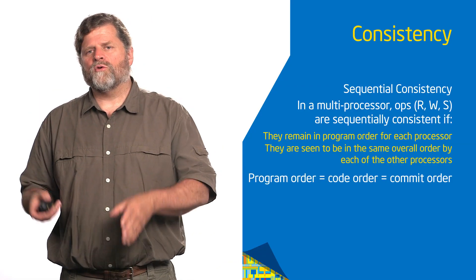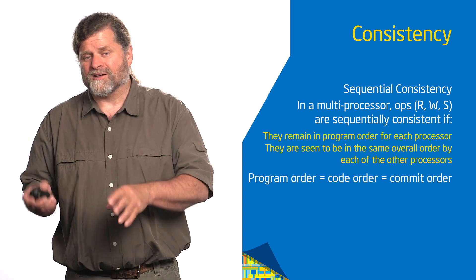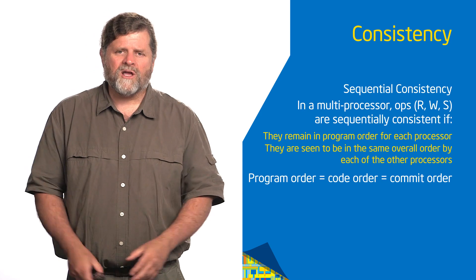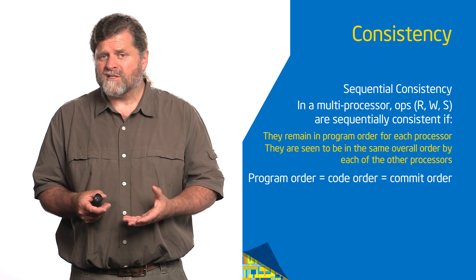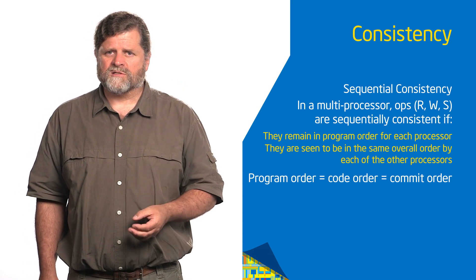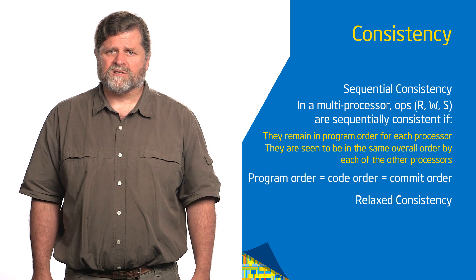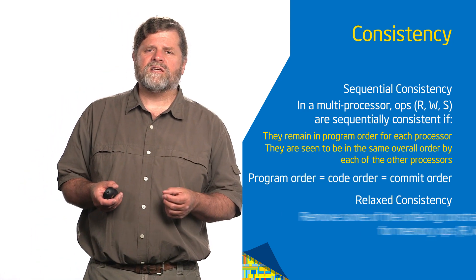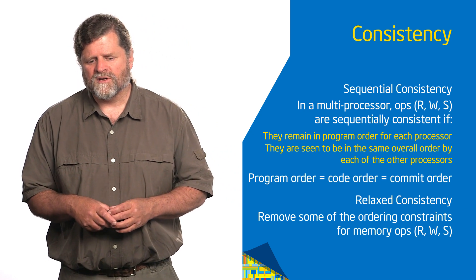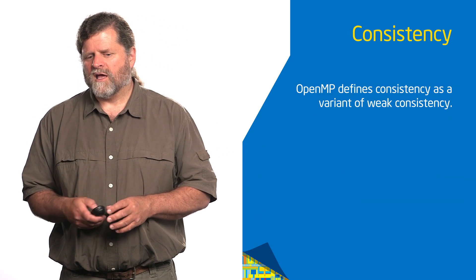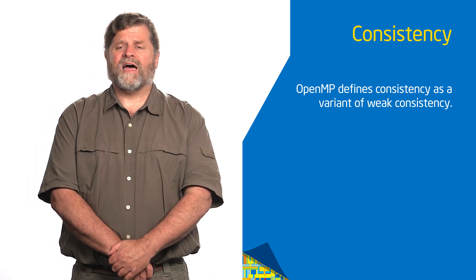Problem. If the program order equals code order, which equals commit order — the order it actually executes — I have lost so many opportunities for performance. I have put so many constraints on how memory can move through the subsystem that my performance is terrible. Sequential consistency on a shared memory machine, even though it's easiest for the programmer to reason about, leads to disastrous performance.